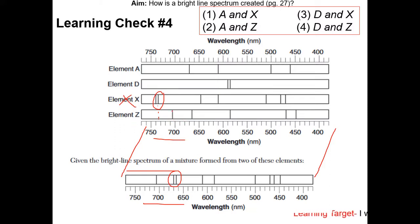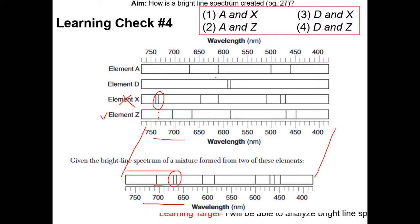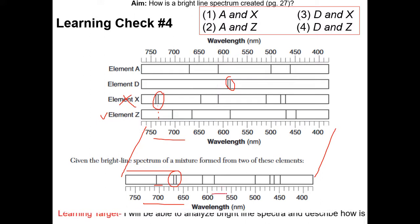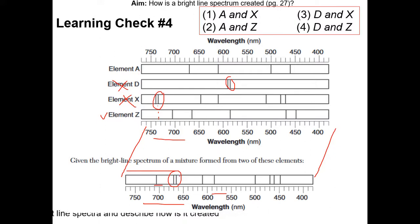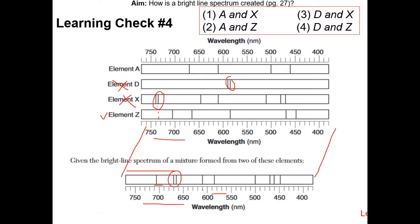For Z: Z has a line close to 700, which is present in the mixture, so Z must be there. Let's check D: D has two lines between 600 and 550 — we don't see that here, so D cannot be in there. So it must be Z and A. Another way to check your answer is to add up all the lines of A and Z — it should equal the total number of lines in the mixture. A has four and Z has five, so we should get nine lines in the mixture, which there are. So the answer is two.